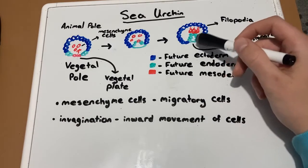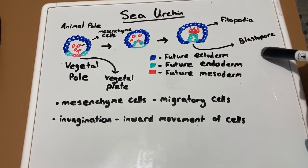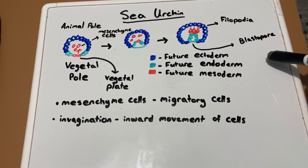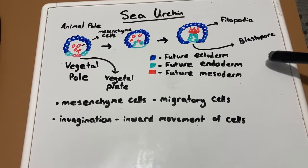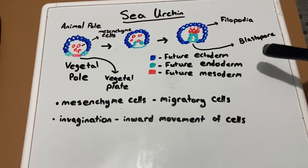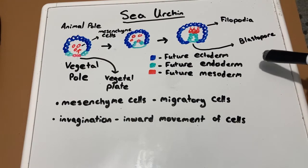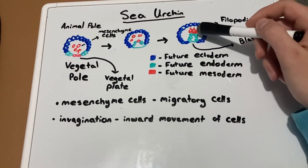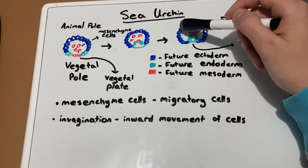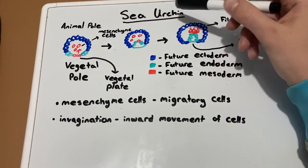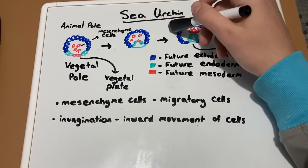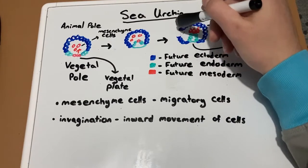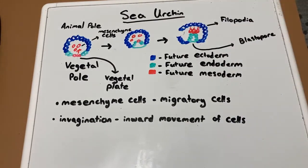The blastopore is the future anus of the organism. After the archenteron is finished extending through the gastrula, a second opening is formed, which will be the organism's mouth. It will keep extending and eventually form an opening at the other end, which will be the mouth.